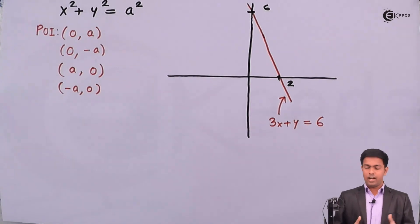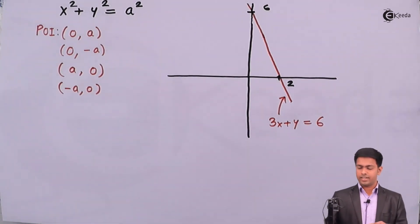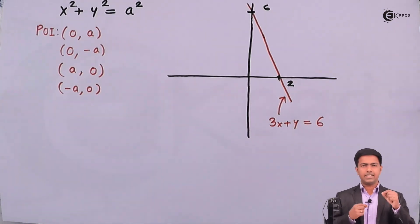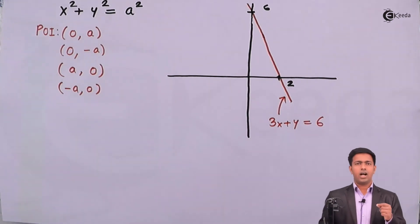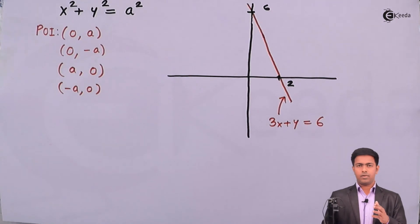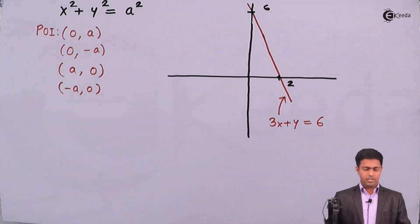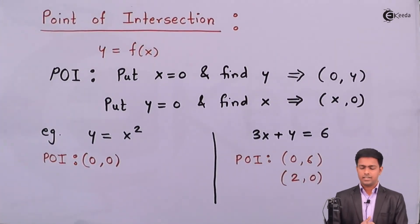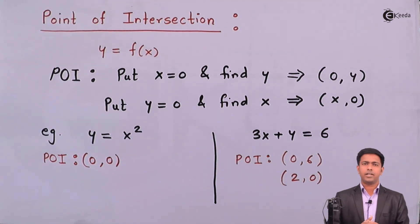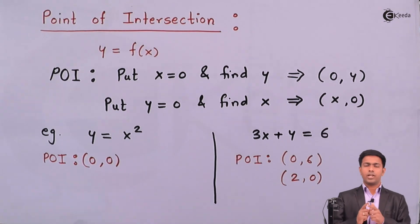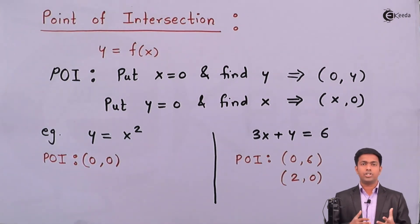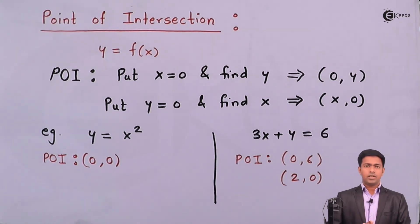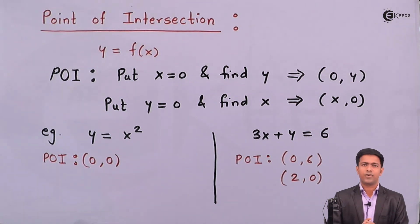Now you must have understood why in school days you were finding the point of intersection for a straight line — because a straight line is a curve where the point of intersection with the coordinate axis characteristic lets us understand its general shape. We have covered the point of intersection with coordinate axis characteristic. To learn more about curve tracing and engineering mathematics, log in to ekeda.com. Thank you very much — see you in the next video to learn further characteristics of curve tracing.